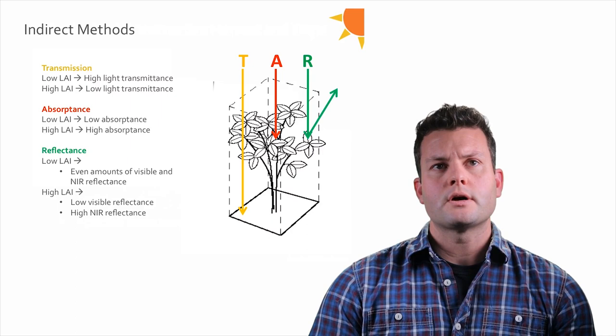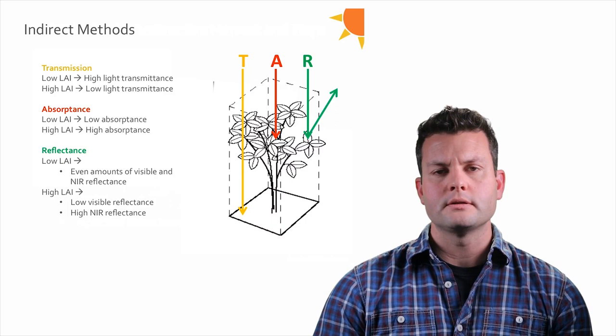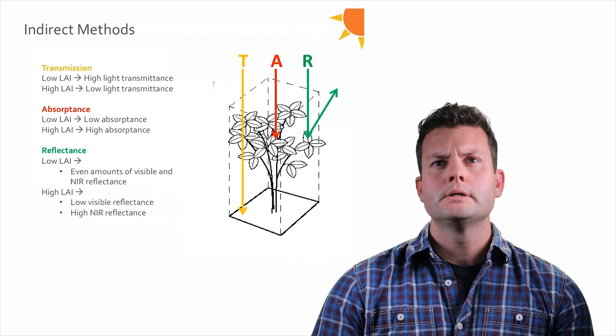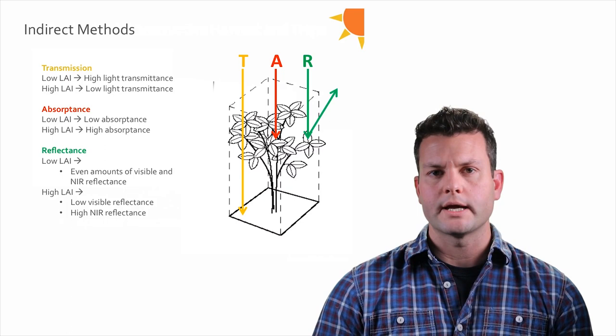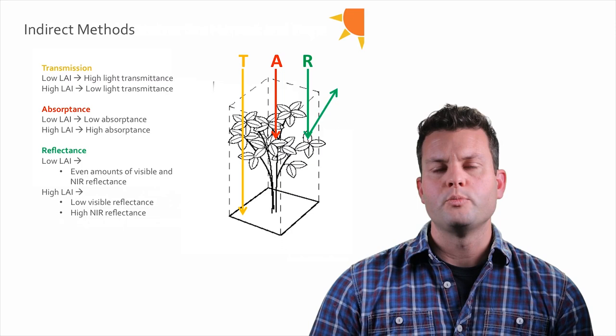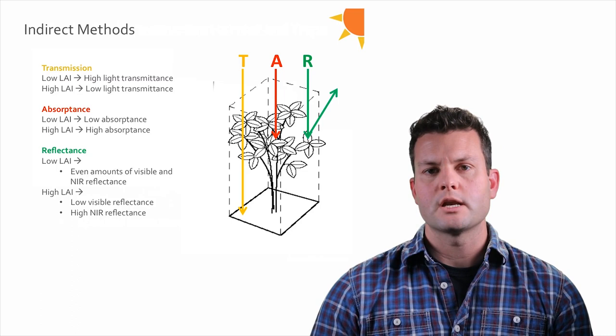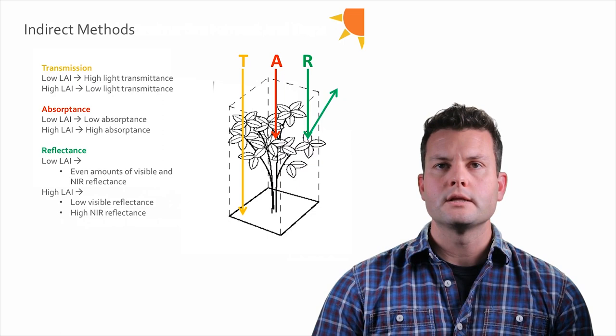For the remainder of the seminar I'll discuss indirect methods for estimating leaf area index. All of these methods rely in some way on measuring how light interacts with the canopy. There are really three fates for light in a canopy: transmission — light passing all the way through; absorption — light captured and used in photosynthesis; and reflectance — light reflected back into the atmosphere. We can measure transmittance and reflectance, but absorptance is used by the plant and is therefore not directly measurable.